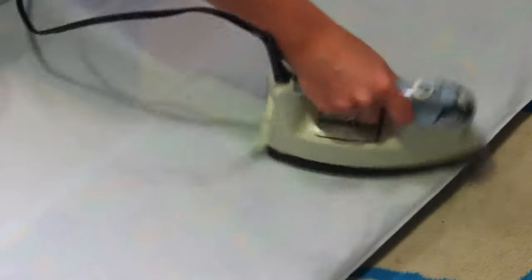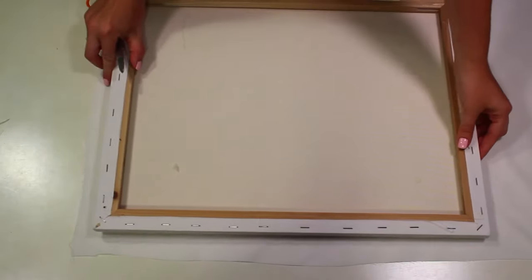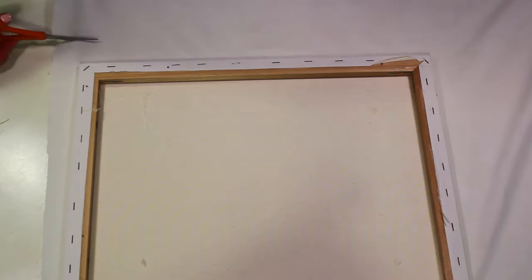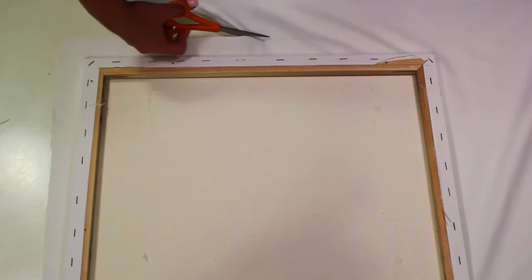First, lay out your fabric and iron out any wrinkles that there might be. So now you want to place your canvas on top of your fabric and you're going to cut out a piece that is slightly larger than the actual canvas size and this doesn't have to be a perfect straight line. You're not going to be seeing this in the end so it doesn't really matter.